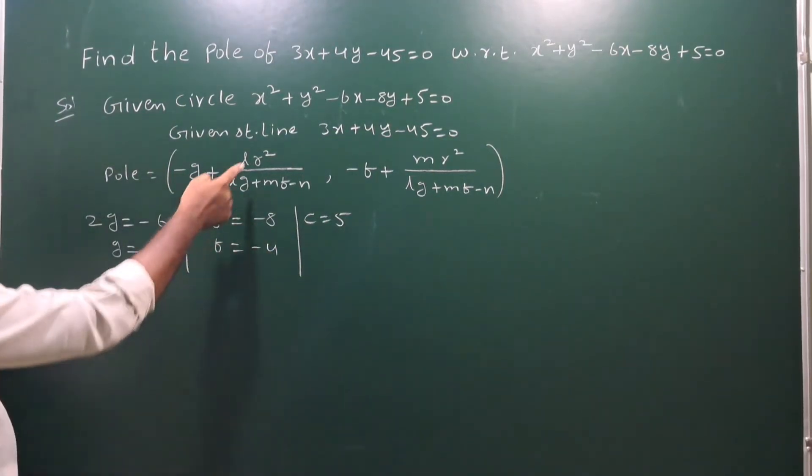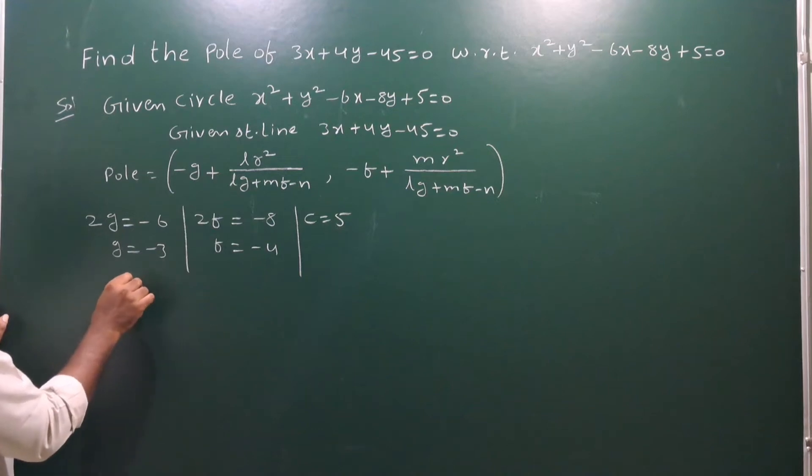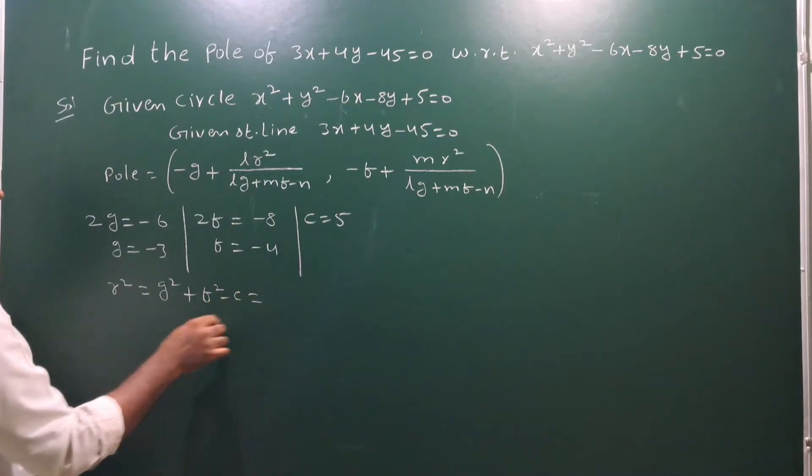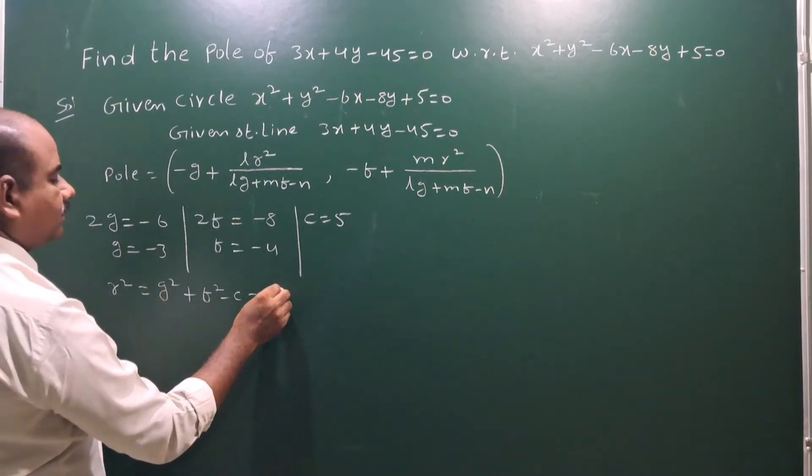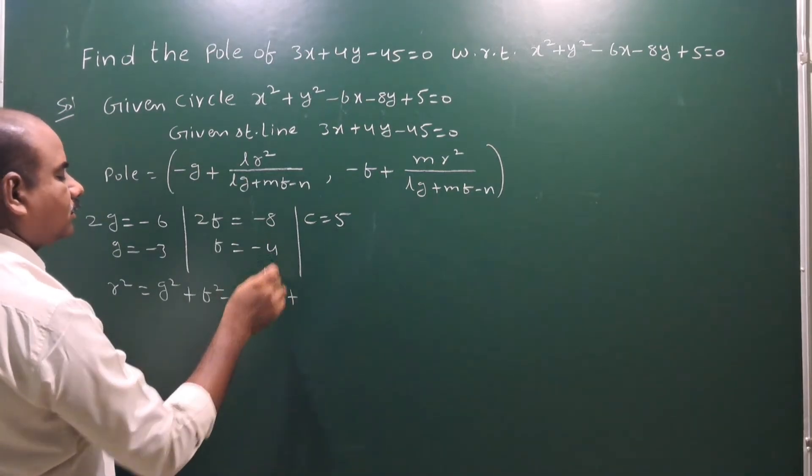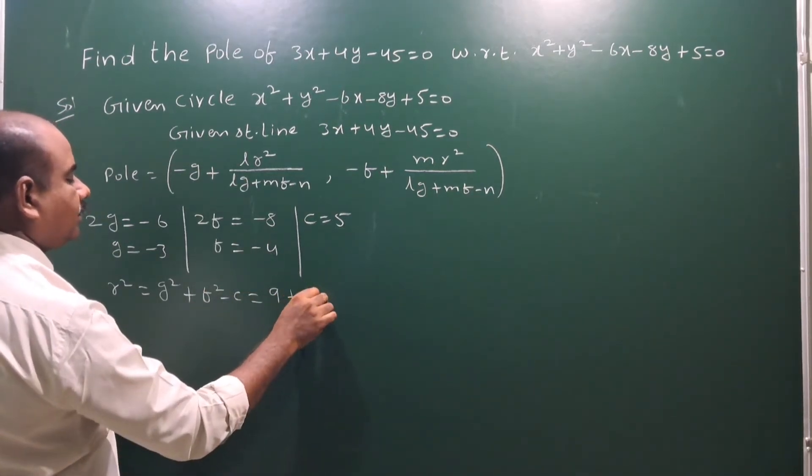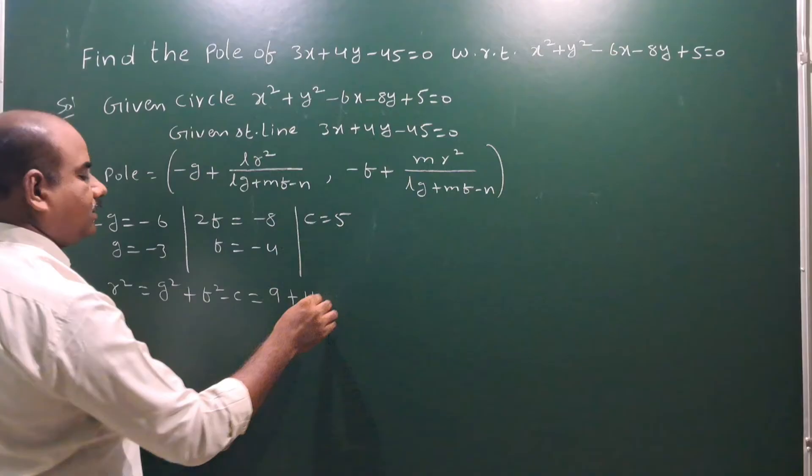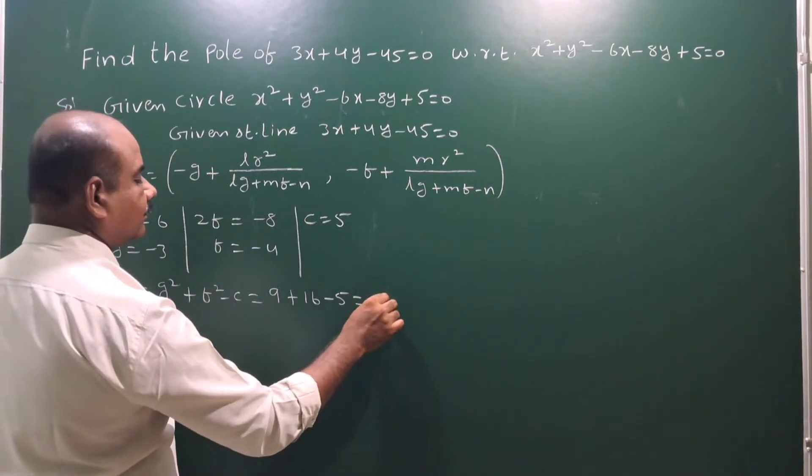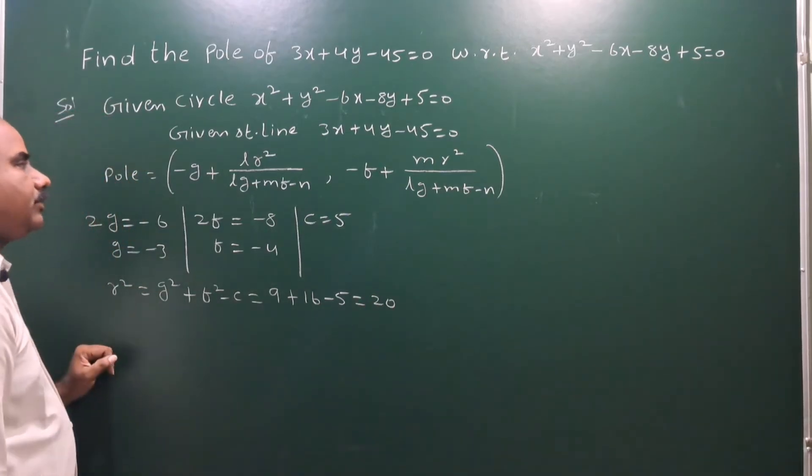Now for r squared, r squared means g squared plus f squared minus c. g squared means minus 3 whole squared becomes plus 9, minus 4 whole squared, f squared means it becomes 16, minus c minus 5. So 16 plus 9, 25 minus 5. So r squared means 20.